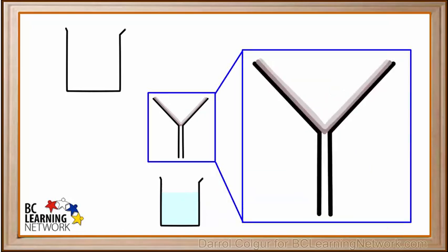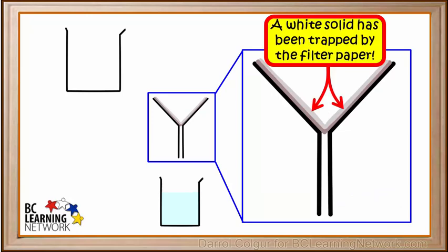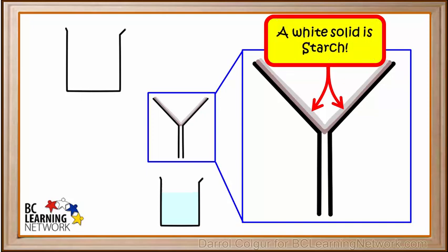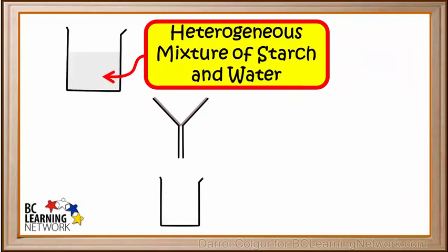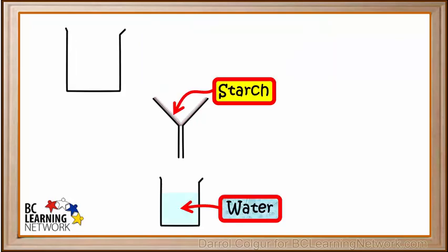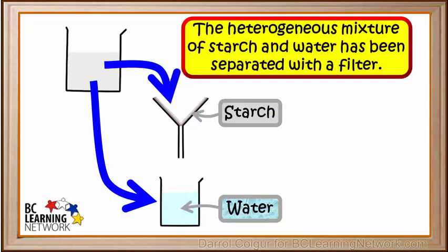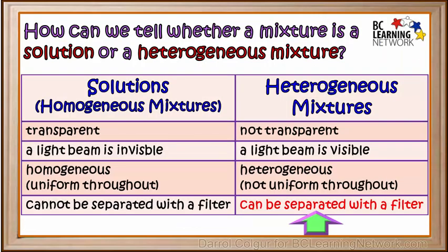Now we'll take a closer look at the filter paper in the funnel. We see that a white solid material has been trapped by the filter paper. It turns out that this white solid is starch. So we started out with a heterogeneous mixture of starch in water, and we ended up with starch in the filter paper and water in the bottom beaker. So we see that the heterogeneous mixture of starch and water has been separated into starch and water with a filter. We'll note in our table that a heterogeneous mixture can be separated with a filter.